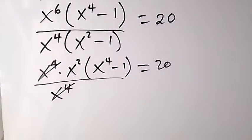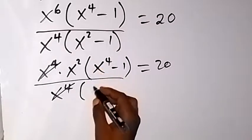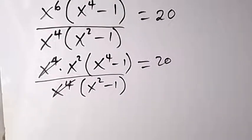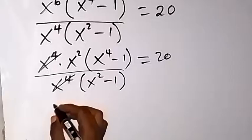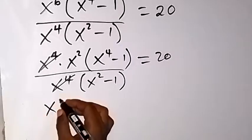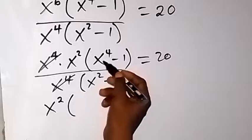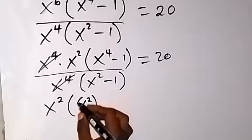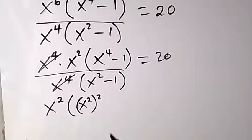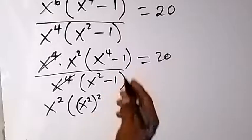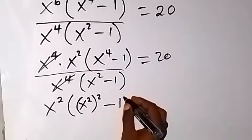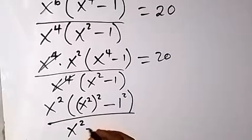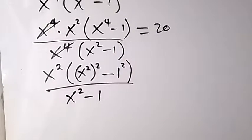After cancellation we have x^2 times (x^4 - 1) divided by (x^2 - 1), equal to 20. We rewrite x^4 as (x^2)^2 and note that 1 can be written as 1^2, so we have x^2 times ((x^2)^2 - 1^2) divided by (x^2 - 1), equal to 20.